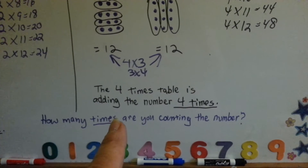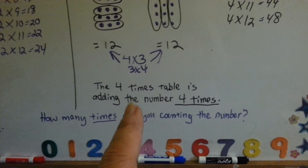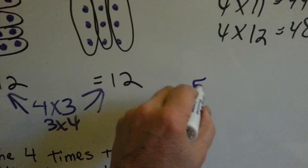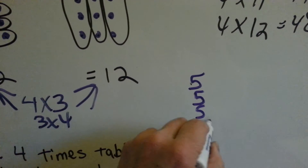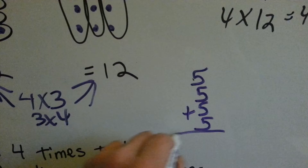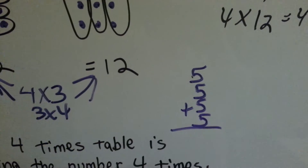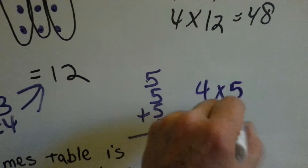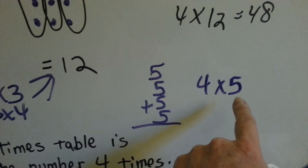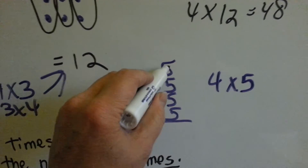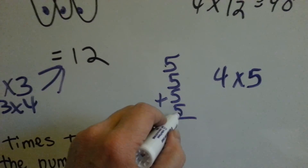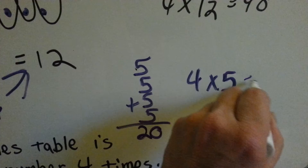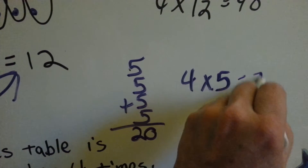The 4 times table is adding the number 4 times. So if you had 5 plus 5 plus 5 plus 5, you have a 5 four times — that's the same as 4 times 5. 5 and 5 is 10, and 5 and 5 is 10, and the two 10s — 10 plus 10 is 20. So 4 times 5 equals 20.